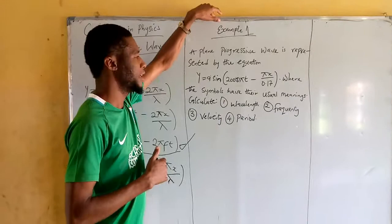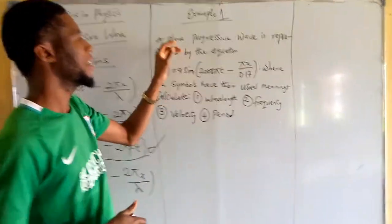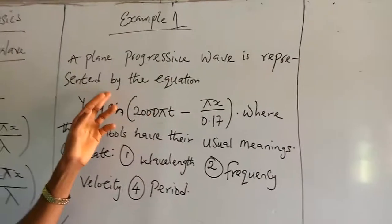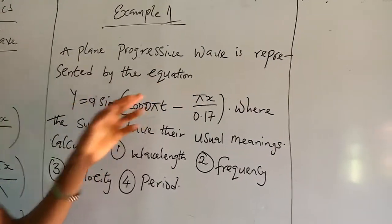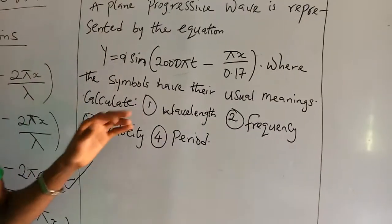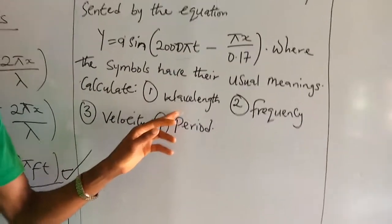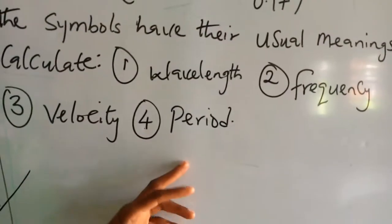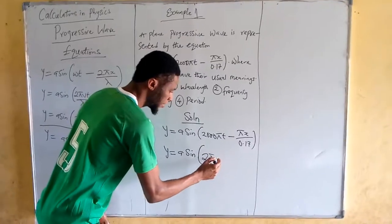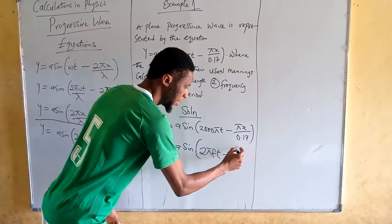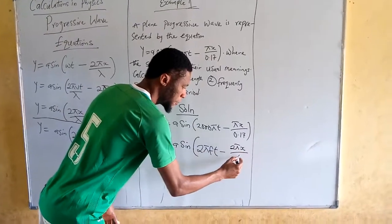Our first example: a plane progressive wave is represented by an equation where the symbols have their usual meaning. They say we should calculate the wavelength, the frequency, the velocity, and the period. Solution: we use 2πft minus 2πx over wavelength.